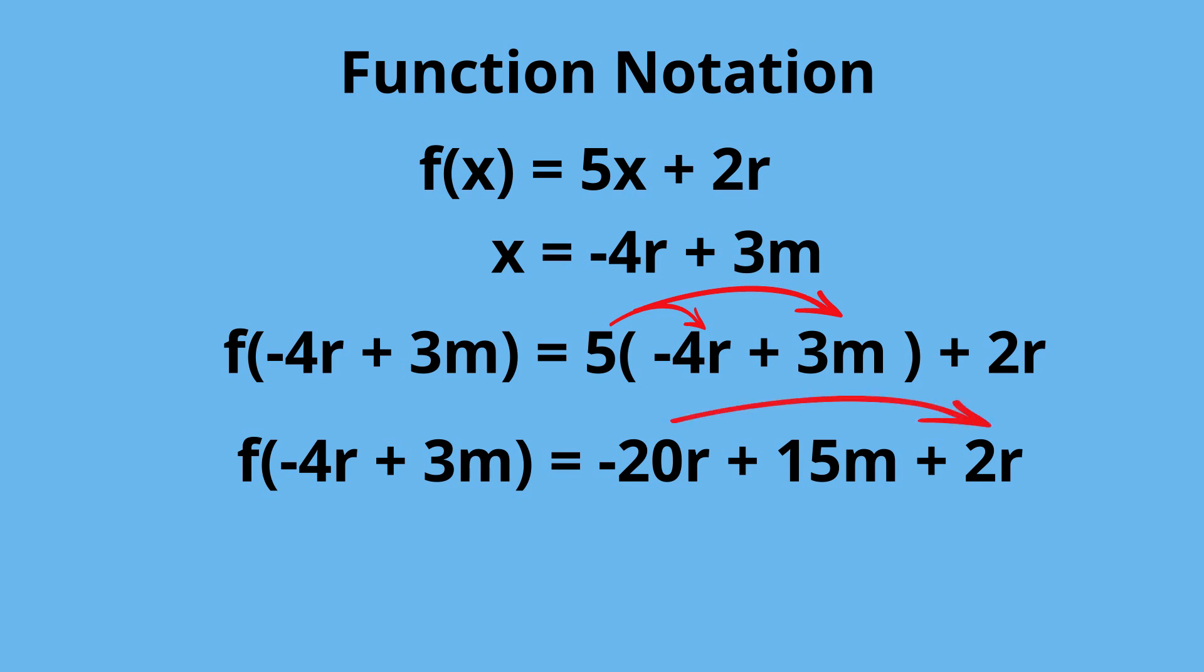We can combine like terms. So you are left with f of negative 4r plus 3m equals negative 18r plus 15m.